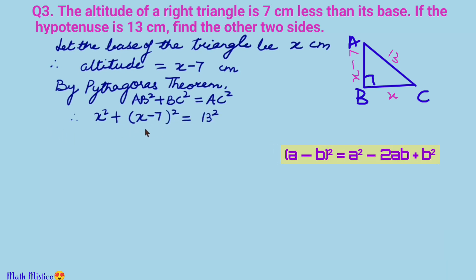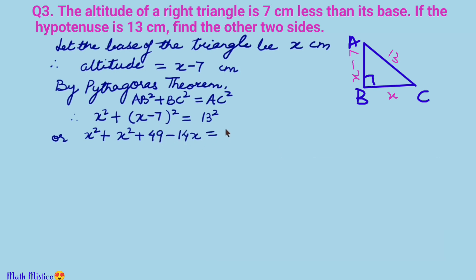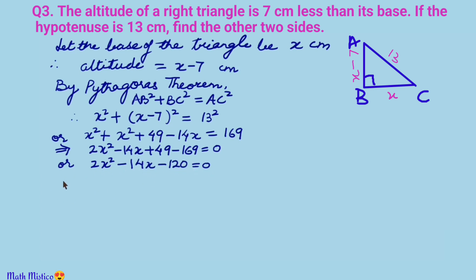Expanding using the (a − b)² identity: x² + x² + 49 − 14x = 169, which gives 2x² − 14x + 49 − 169 = 0, or 2x² − 14x − 120 = 0. Since every term is divisible by 2, we simplify to x² − 7x − 60 = 0. This equation represents the given situation, and solving it will give x and hence the sides of the triangle.